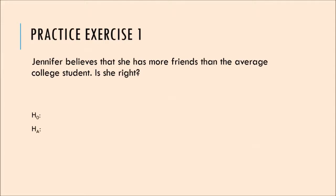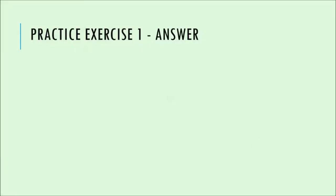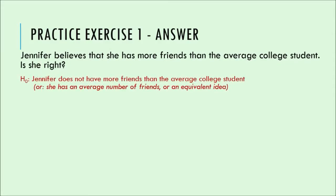So let's say Jennifer believes she has more friends than the average college student does. What are the null and alternative hypotheses? The null hypothesis is that Jennifer does not have more friends — don't say she has fewer friends, because the null hypothesis is not directional. It just says 'not this.' So: not more friends than the average college student, or equivalently, she has an average number of friends. The alternative would be that she has more friends.